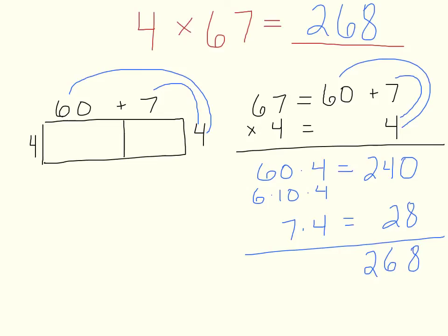So this is starting to move away from being able to see things in the place value section, which is a good method and you can stick with that if it works for you, and starting to do things in a more abstract or naked numbers way. I like to pair the area model with this at first so that you can really see what's going on. Happy multiplying!